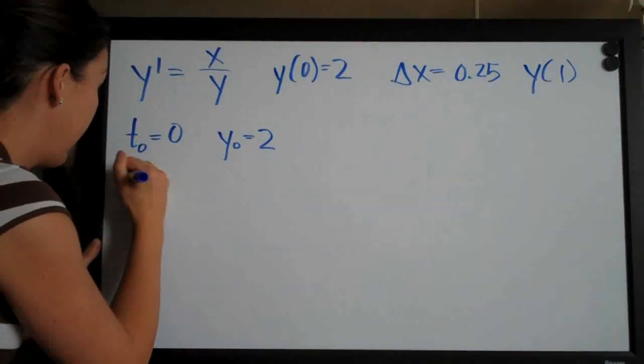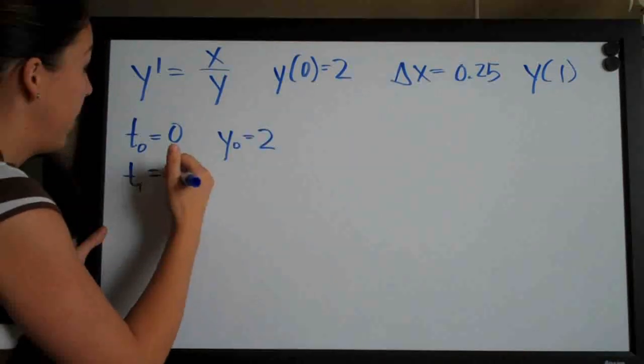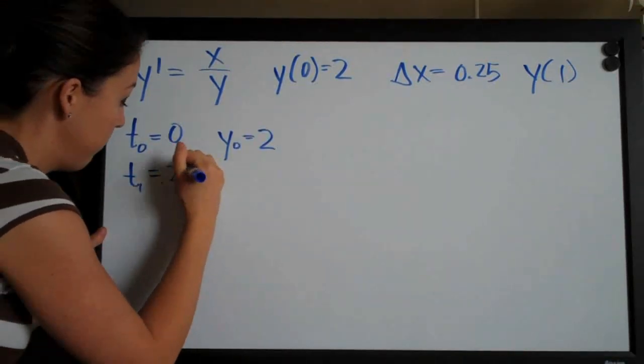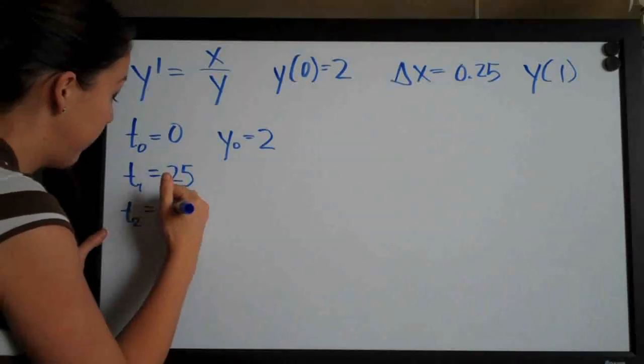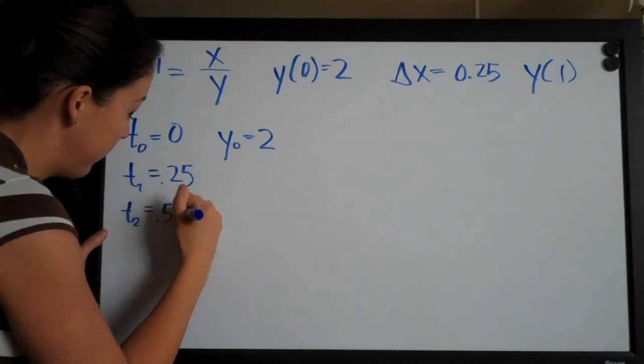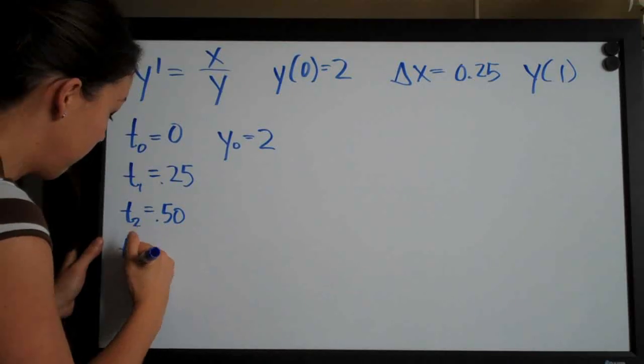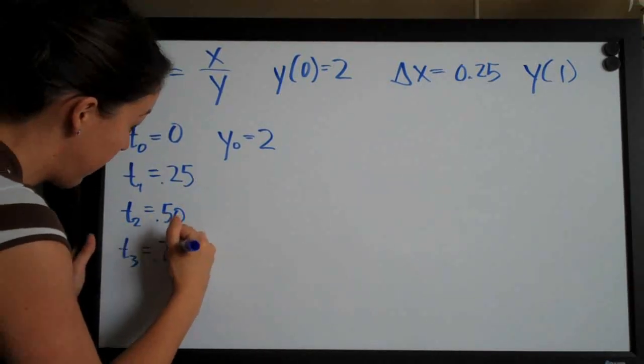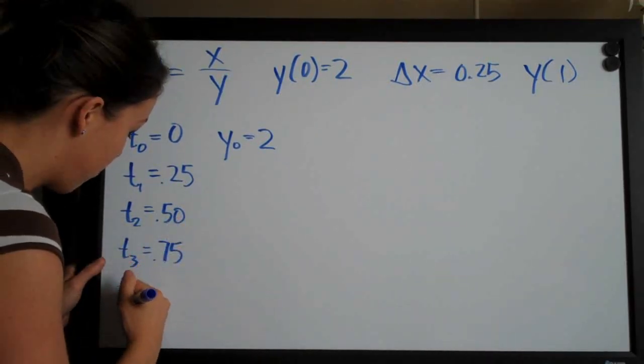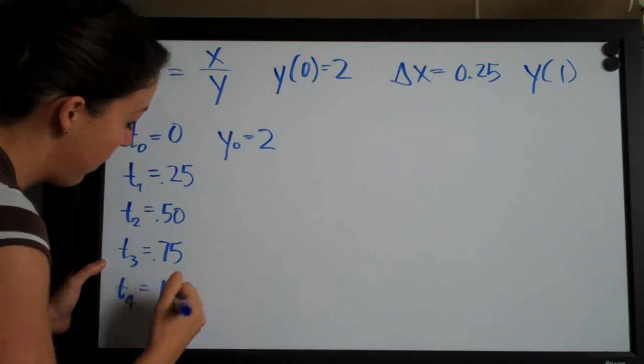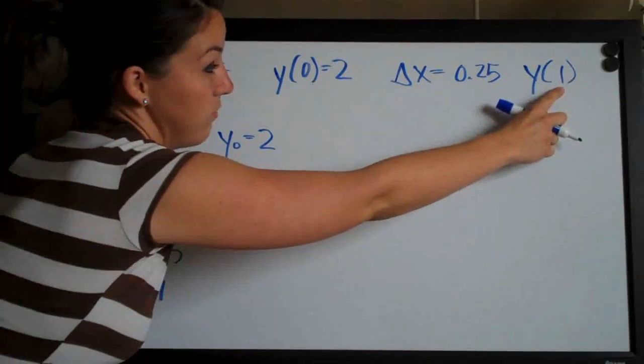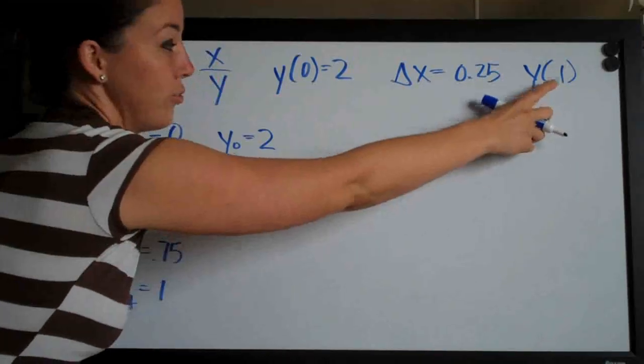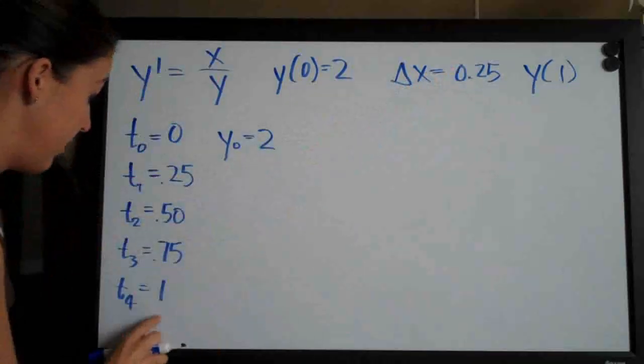So let's go ahead and start adding 0.25. So 0 plus 0.25 is 0.25, then 0.50. T of 3 is obviously going to be 0.75, and t of 4 is going to be equal to 1. And now we know that we can stop because we've reached this value here, which is what we're trying to estimate when t is equal to 1.